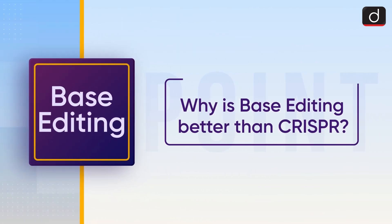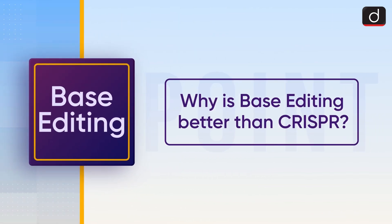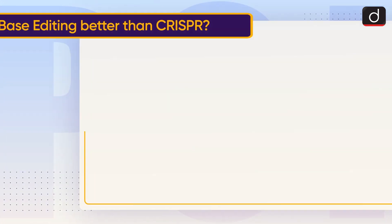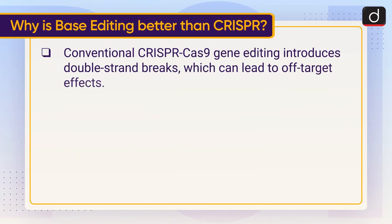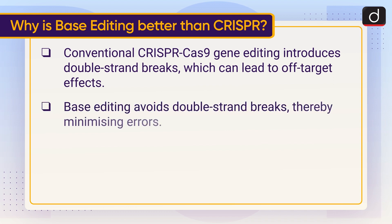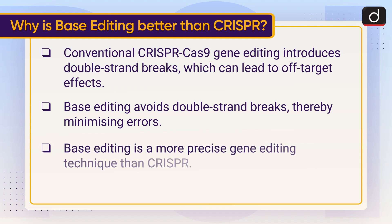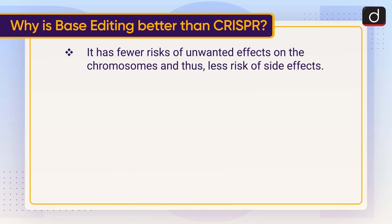Now let's understand why base editing is better than CRISPR. Conventional CRISPR-Cas9 gene editing introduces double-strand breaks, which can lead to off-target effects. Base editing avoids double-strand breaks, thereby minimizing errors. Base editing is a more precise gene editing technique than CRISPR — it has fewer risks of unwanted effects on the chromosomes and thus less risk of side effects.